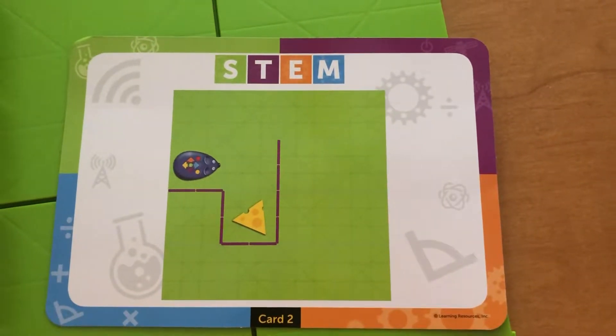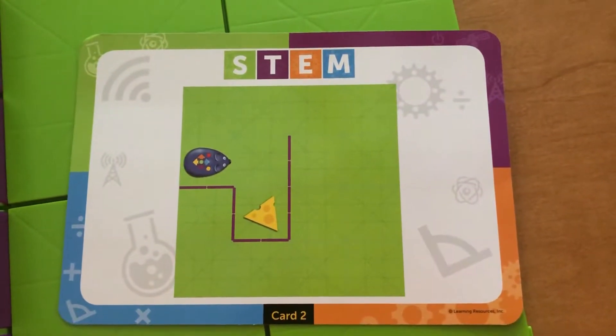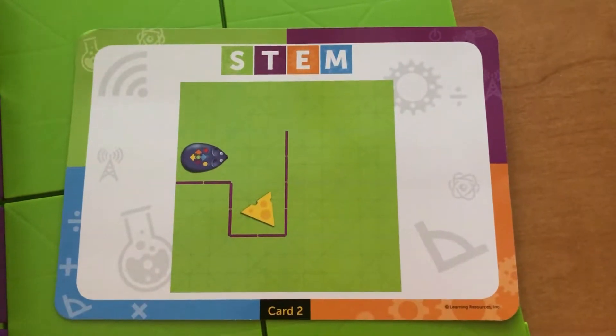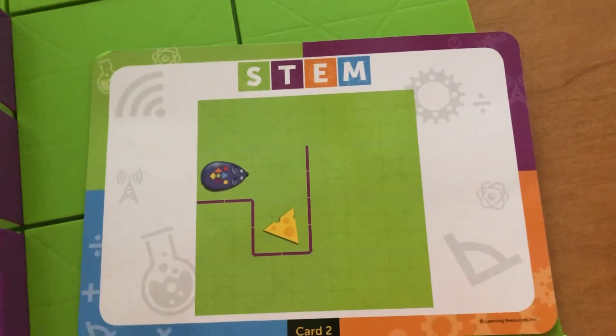In this Code & Go robot mouse activity, I'm going to use card number two, which shows the mouse making a turn.